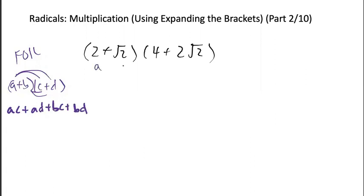Let's say this is our A, B, C, and D. So we go FOIL – first, outer, inner, last.